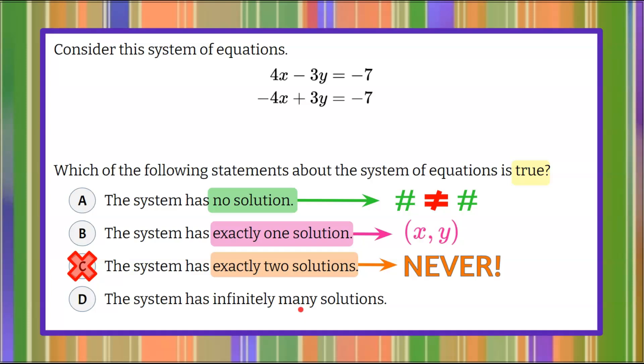And then D, the system has infinitely many solutions. This would happen algebraically when we solve it, that the x and y terms would be eliminated during solving, and we would end up with a true numerical statement. A number equals a number.